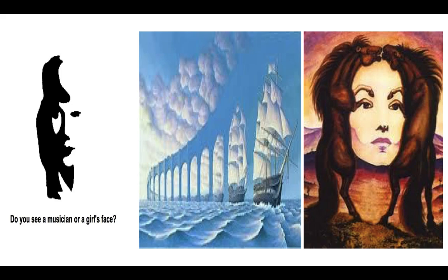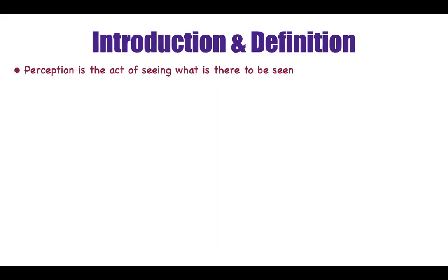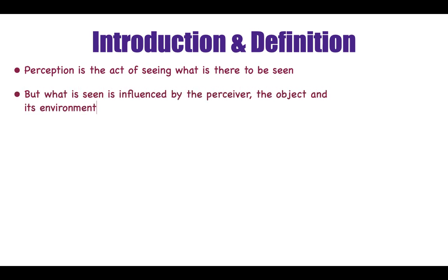Now, how you perceive certain things depends on various factors, but first of all let's understand what exactly is perception. Perception is the act of seeing what is there to be seen. But what is seen is influenced by the perceiver, the object and its environment.